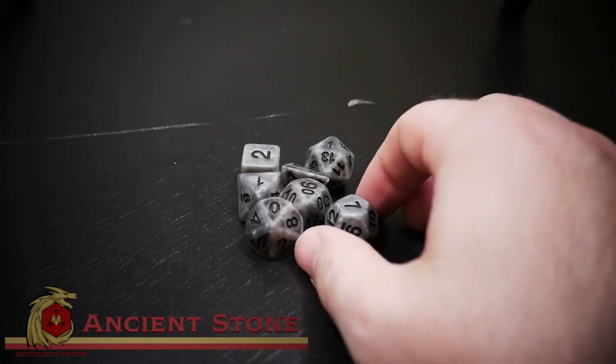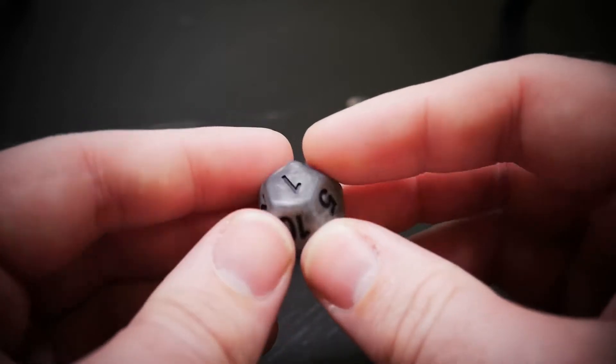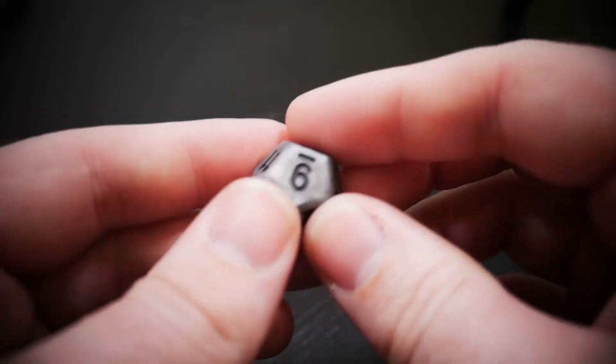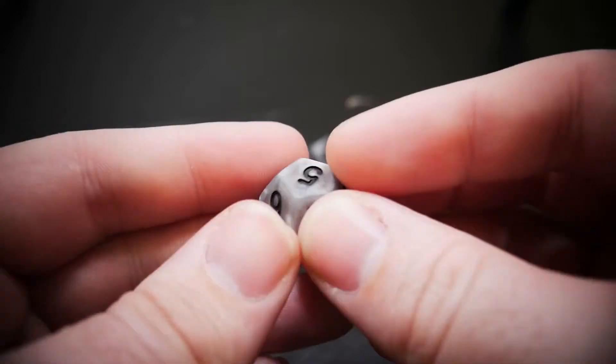And here we have Ancient Stone. This is a primary colored black set of acrylic standard size dice with big black numbered legends on each and every face.